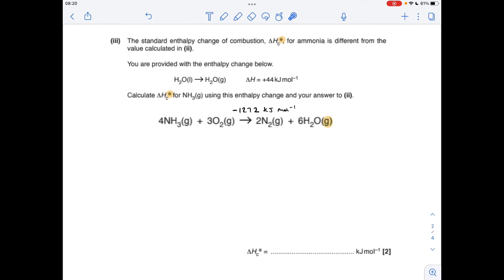The last part of the question is a little bit tricky. So we've just calculated a value, an enthalpy change value for this reaction here. So we now know that that's minus 1272 kilojoules per mole. But we've got to use that and this extra information to calculate the value for the enthalpy change of combustion for ammonia. There's a couple of things we need to factor in here.